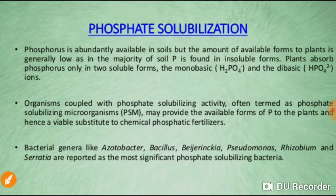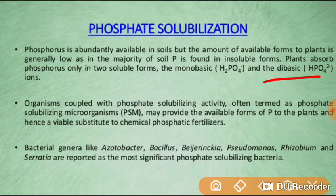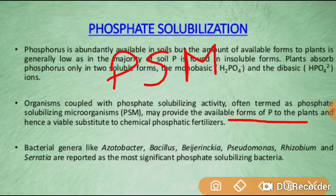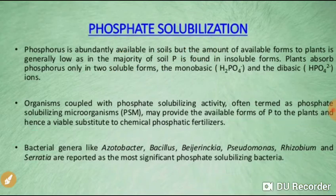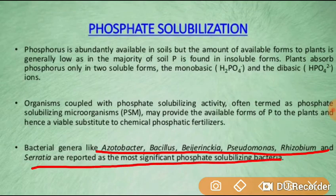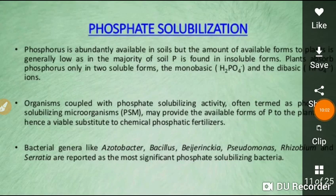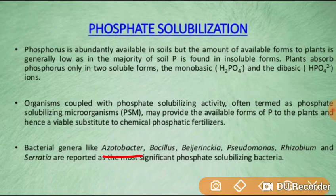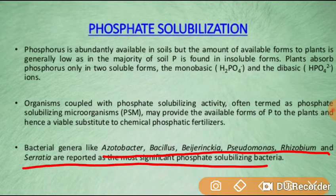Phosphate solubilizing microorganisms provide available phosphate to plants and are considered viable substitutes for chemical phosphate fertilizers. Bacteria like Azotobacter, Bacillus, Rhizobium, and Serratia also work as significant phosphate solubilizing bacteria.